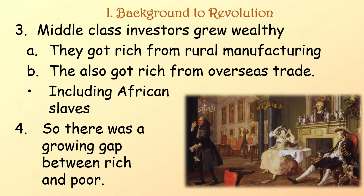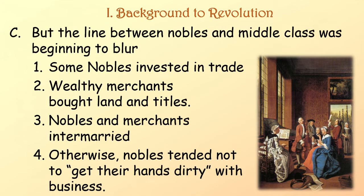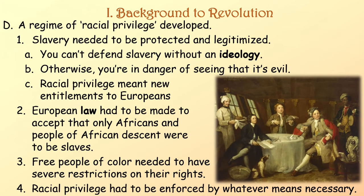There was a growing gap between the rich and the poor, but the line between the nobles and the middle class was beginning to blur. Some nobles invested in trade, wealthy merchants bought land and titles, and nobles and merchants intermarried, though nobles tended not to get their hands dirty with business. The regime of racial privilege developed — slavery needed to be protected and legitimized, and you can't defend slavery without an ideology, otherwise you're in danger of seeing that it's evil. Racial privilege meant new entitlements to Europeans. European law had to be made to accept that only Africans and people of African descent were to be slaves, free people of color needed severe restrictions on their rights, and racial privilege had to be enforced by whatever means necessary.